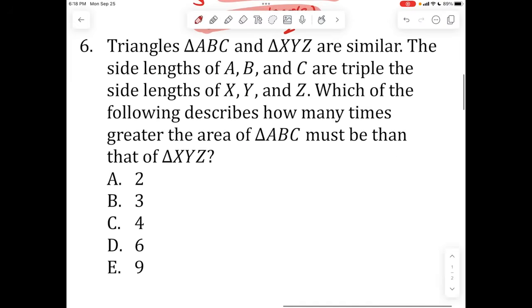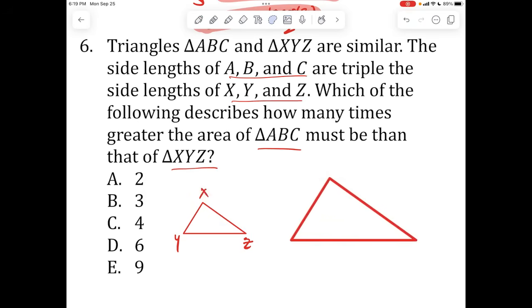Triangles ABC and XYZ are similar. The side lengths of ABC are triple the side lengths of XYZ. Which of the following describes how many times greater the area of ABC must be than the area of XYZ? So, similar triangles. What does that mean? If I have a triangle like this, the smaller one is XYZ, that means my larger triangle is just going to be the exact same thing, but it's just going to look like an upscaled version of it. So we go ABC XYZ in that direction, in this order. So it's just a times three side length increase.